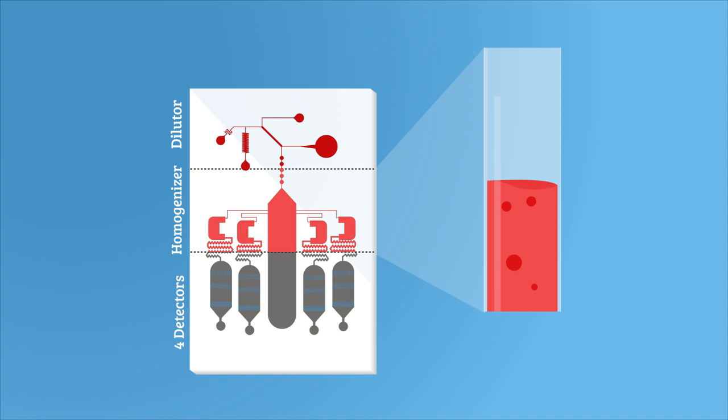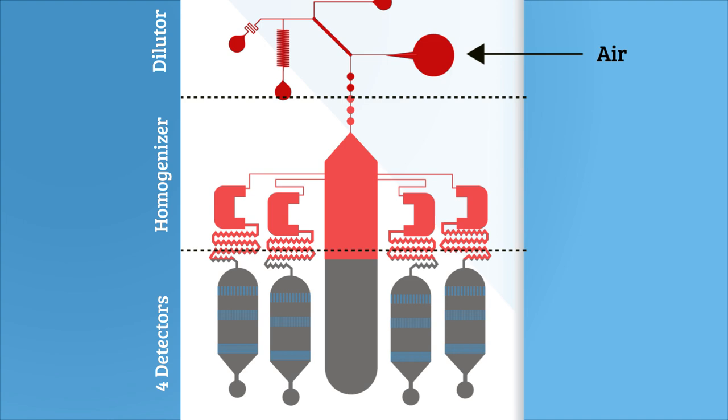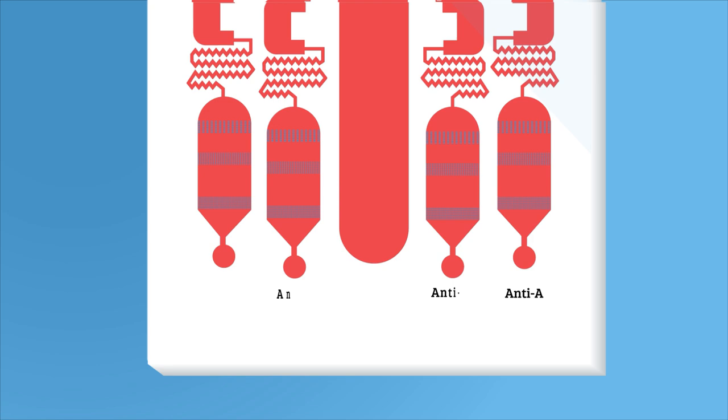Once the solution has been fully mixed, air is squeezed into the waste chamber and the liquid flows into four detectors, which consist of a reaction chamber and an agglutination capturing slit. Three of these detectors are preloaded with reagents designed to detect which antigens the blood contains—A, B, and D—with the fourth containing only saline, acting as a control.